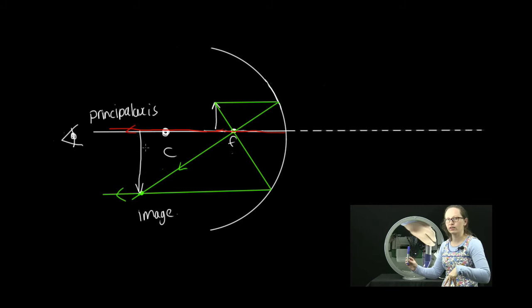This is a real image because the light actually passes through this point — if we put a screen here, the image would be formed on it. You can see that the image is larger and flipped upside down, just like we observed in the mirror demonstration.